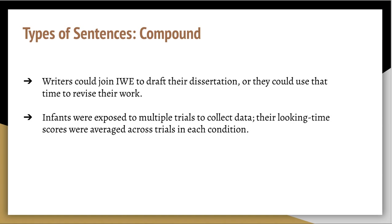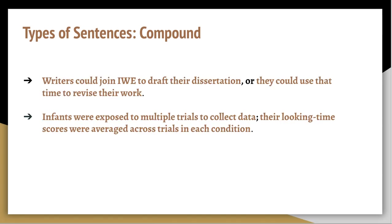Take a moment and pause the video to locate the independent clauses within these two examples. As you can see, I have color-coded the independent clauses that make up these two compound sentences. In the first example, two similar ideas are joined together by a comma and the coordinating conjunction OR. A helpful way to remember the coordinating conjunctions is the acronym FANBOYS — F-A-N-B-O-Y-S — standing for: for, and, nor, but, or, yet, and so. Both independent clauses describe how writers might use their time during IWE, so it makes sense to join them into one compound sentence.